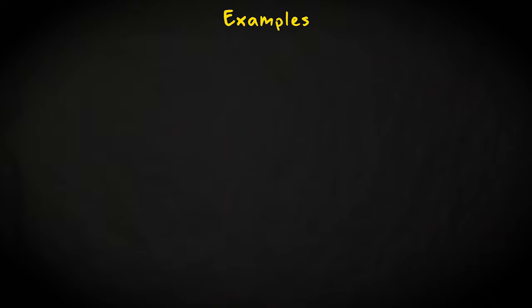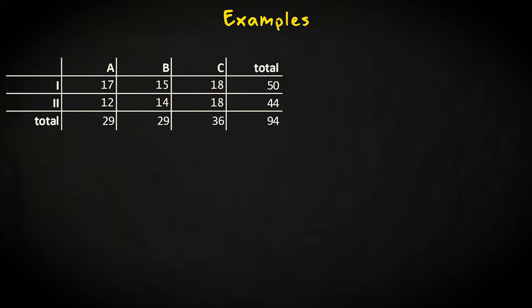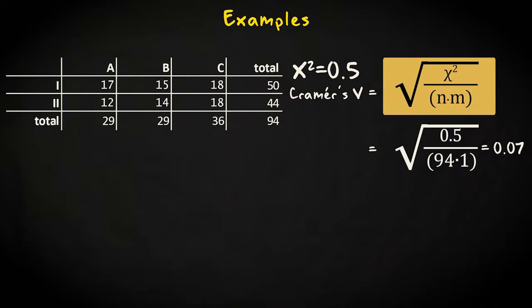Let's calculate Cramer's V for a few contingency tables to see how it works. This is a 3 by 2 table with no association. The chi-squared value is 0.5 and Cramer's V is 0.07.